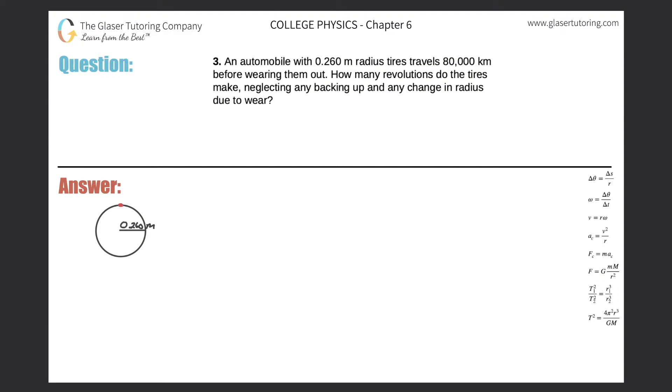Number three, an automobile with 0.260 meter radius tires travels 80,000 kilometers before wearing them out. How many revolutions do the tires make neglecting any backing up and any change in radius due to wear?